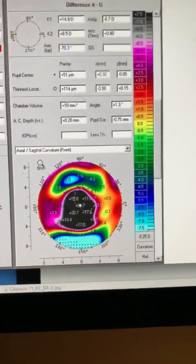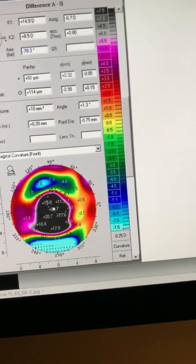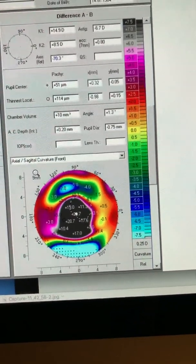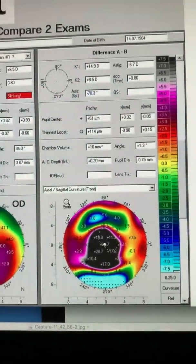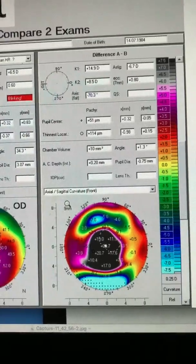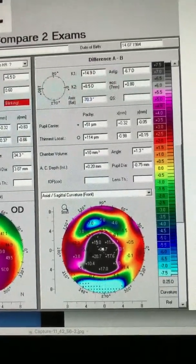Making this patient go from an uncorrected and best corrected count fingers, to an astounding 20/40 minus uncorrected, corrects to 20/30 minus, with minus 2, minus 3, at 90 degrees.